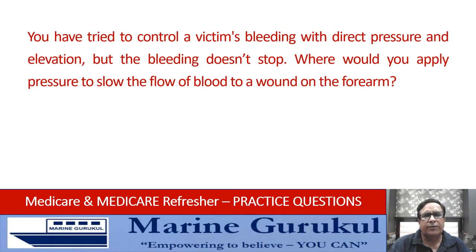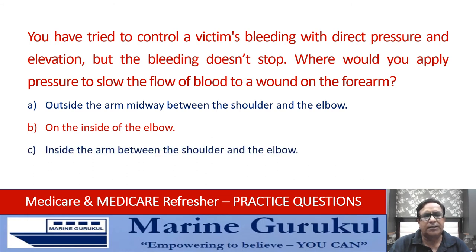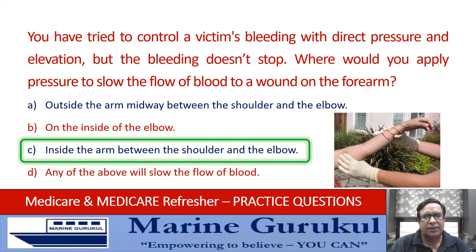You have tried to control a victim's bleeding with direct pressure and elevation, but the bleeding doesn't stop. Where would you apply pressure to slow the flow of blood to a wound on the forearm? The answer is C — inside the arm, midway between the shoulder and the elbow. As seen in the diagram, this is where the pressure shall be applied.